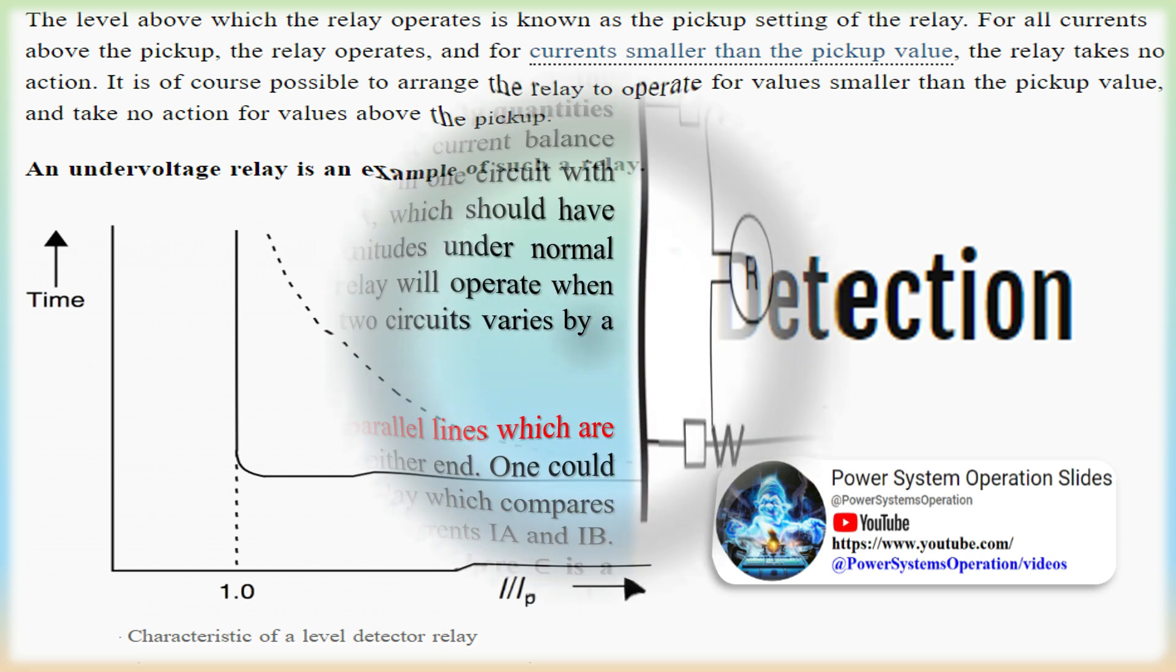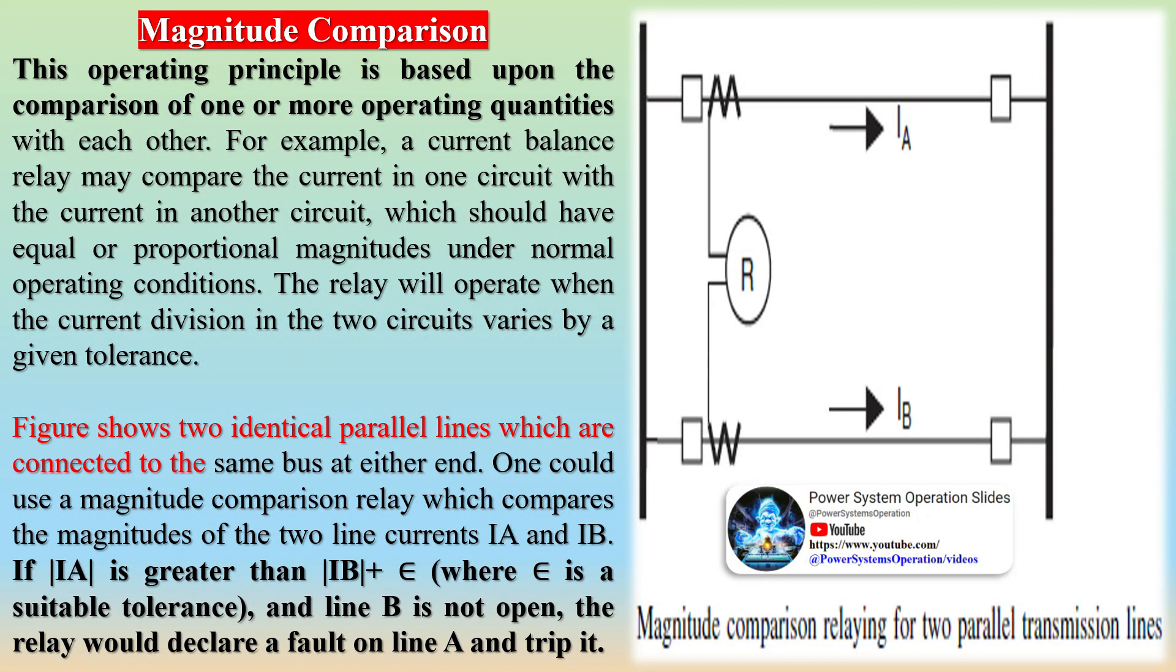Any current above a set level chosen to be above 306 A by a safety margin in the present example may be taken to mean that a fault, or some other abnormal condition, exists inside the zone of protection of the motor.